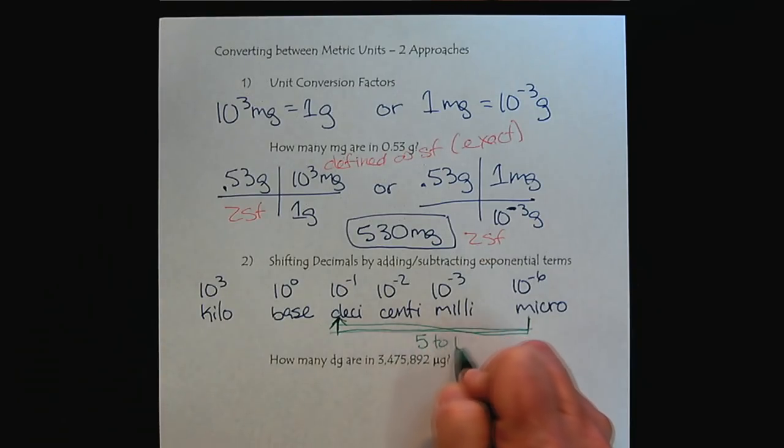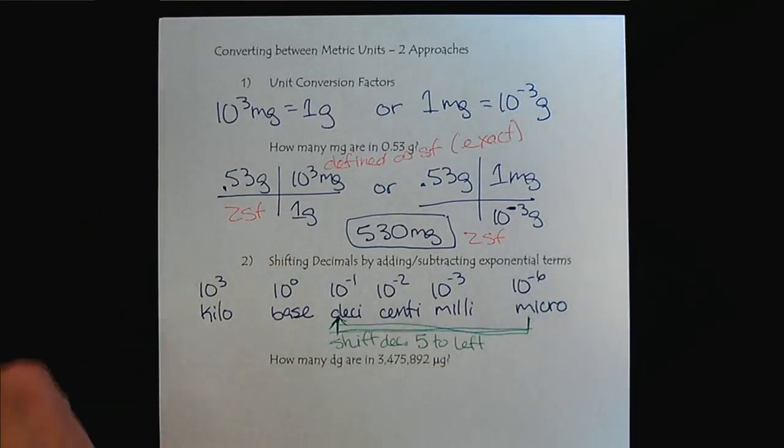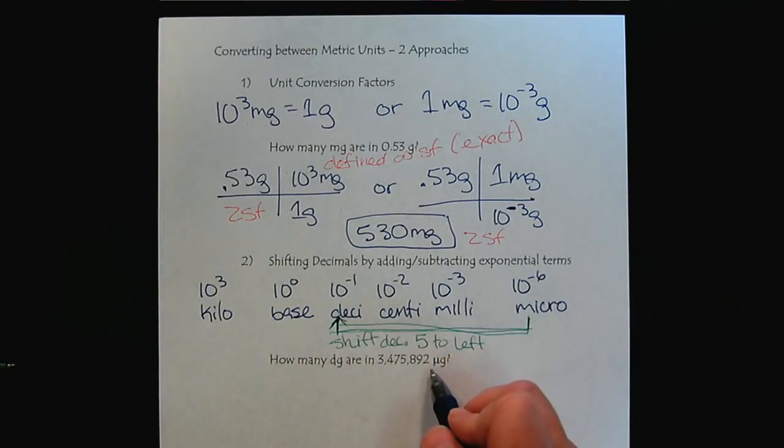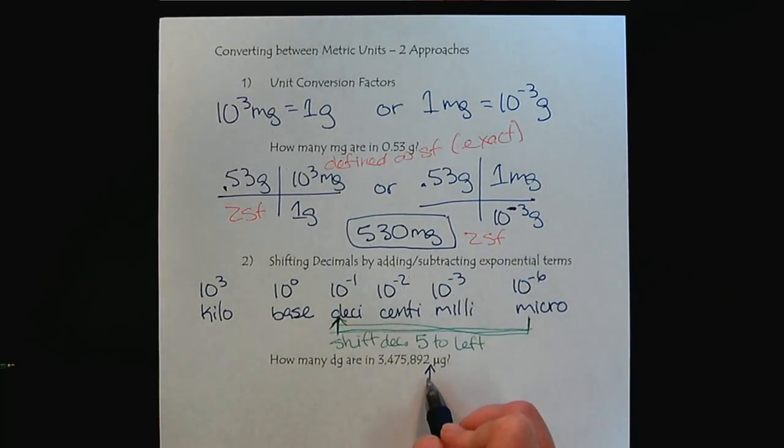So we're moving from minus six to minus one. So we're going to go five to the left. We're going to shift our decimal. So right now the decimal is here. So we have to shift it five to the left.